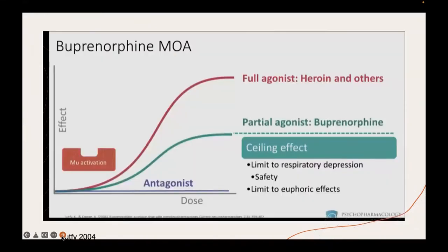Just a visual description of buprenorphine's partial agonist nature: it does have a ceiling effect, leading to decreased negative consequences such as respiratory depression and the euphoric effects, making it a better option for patients with OUD.